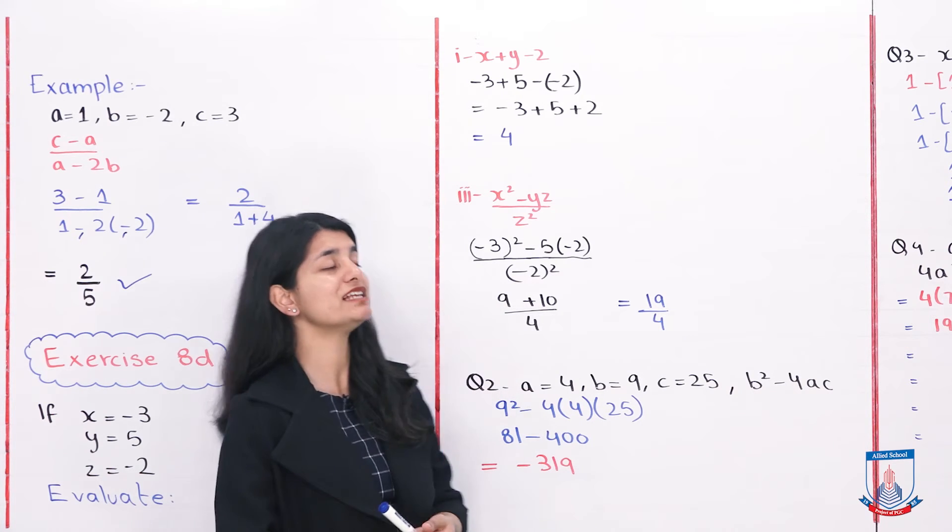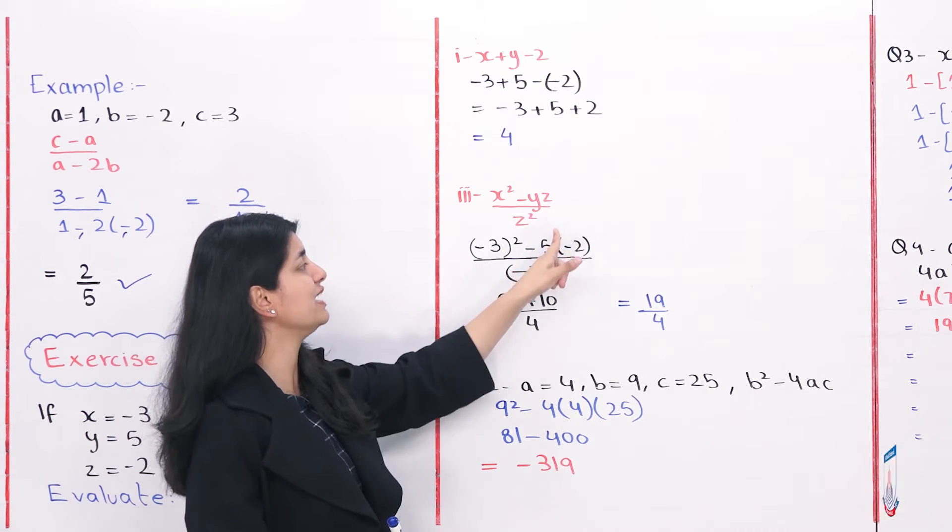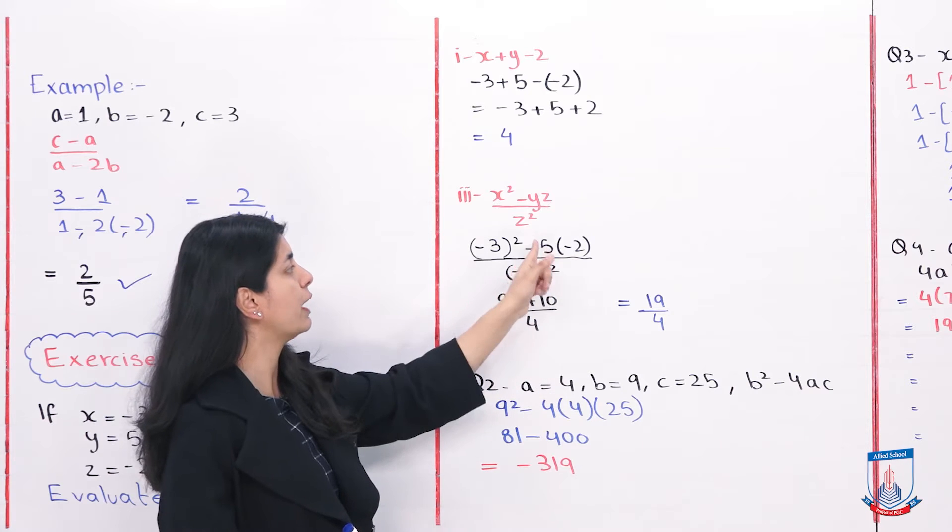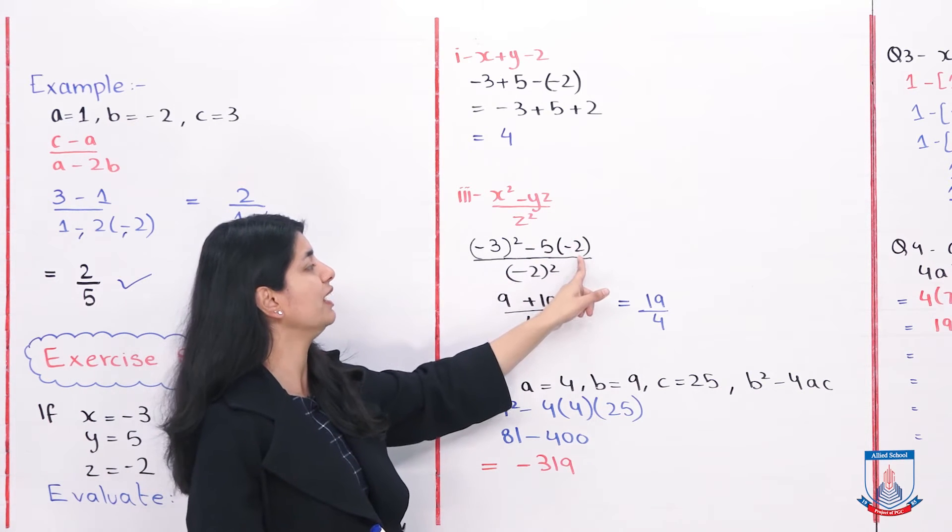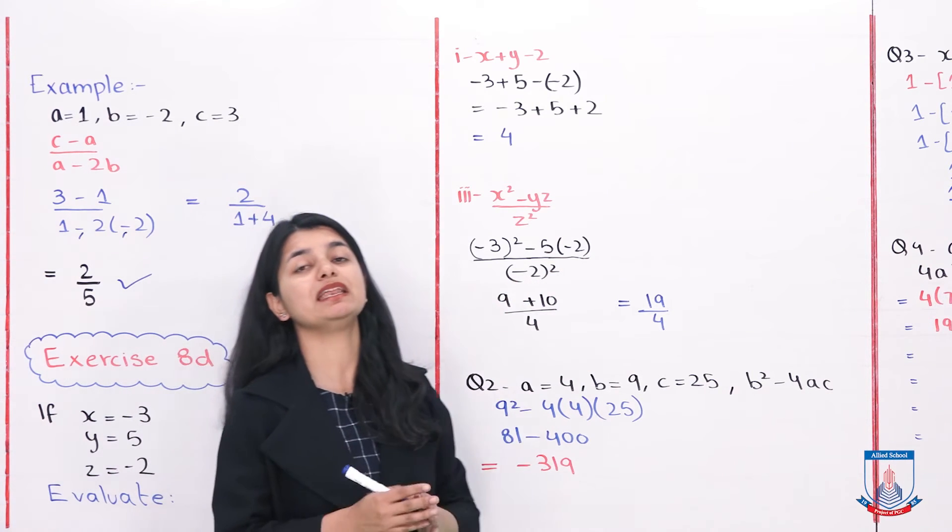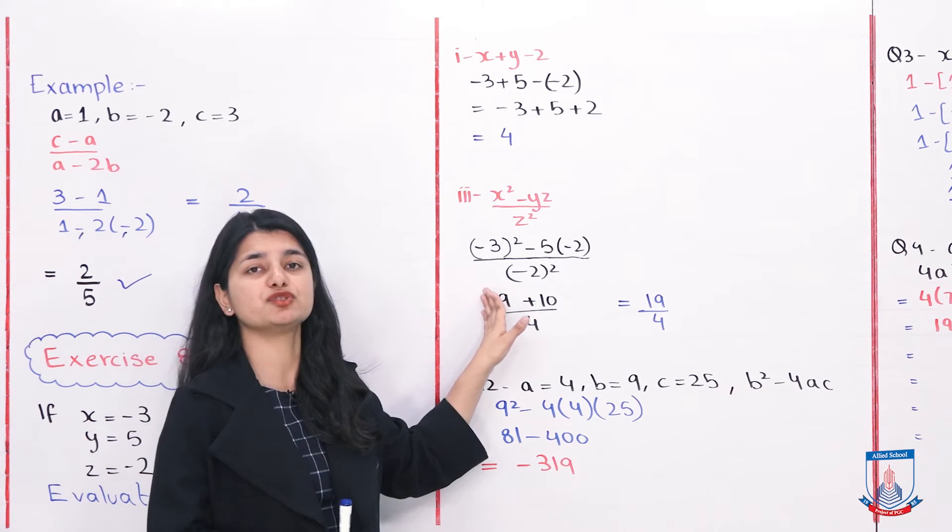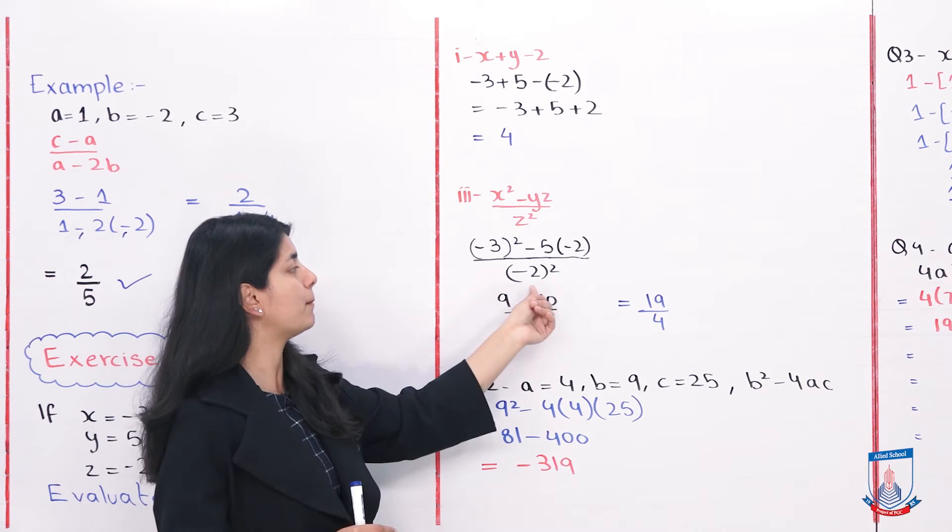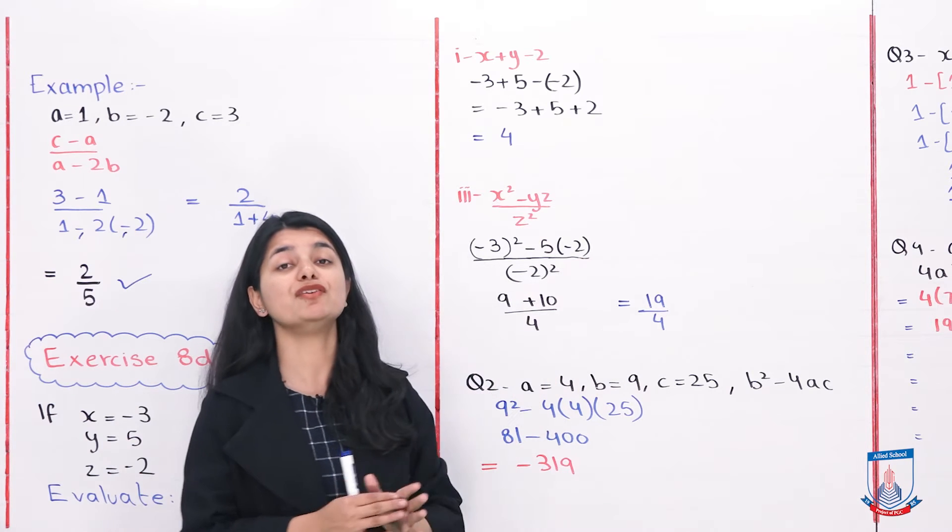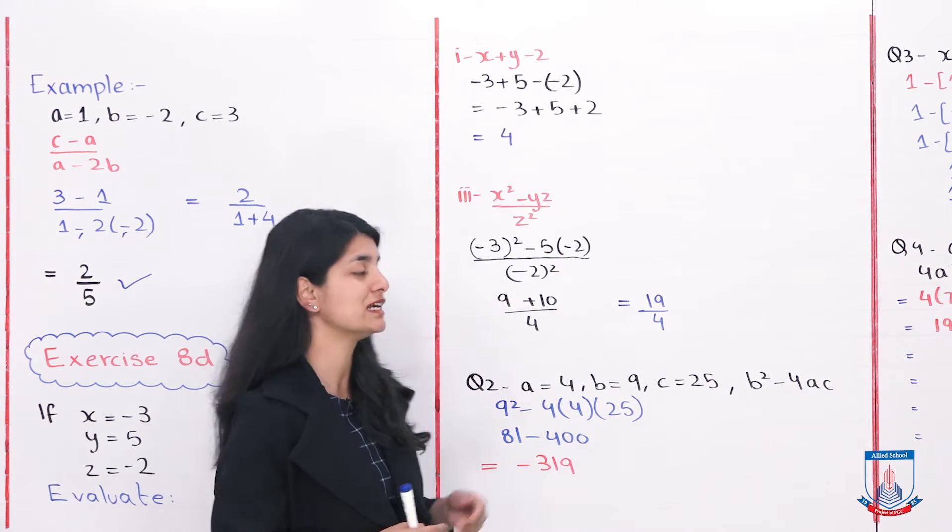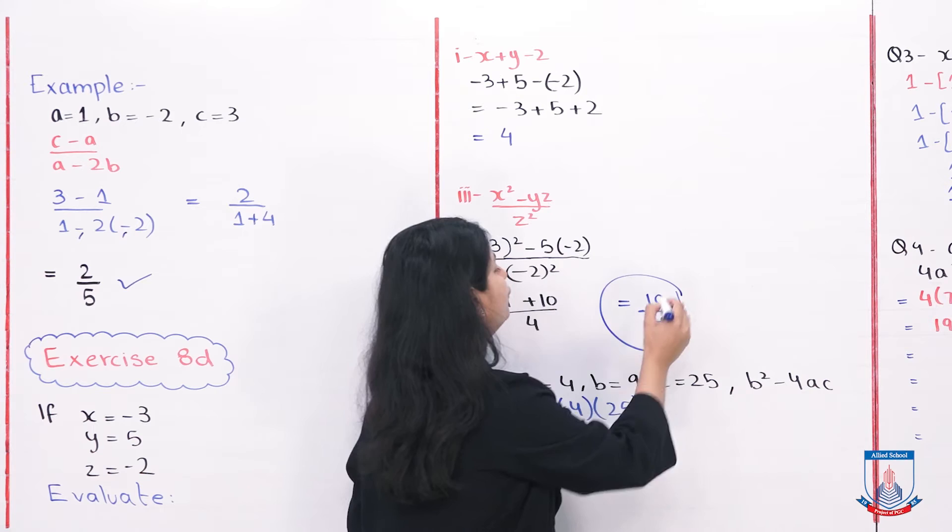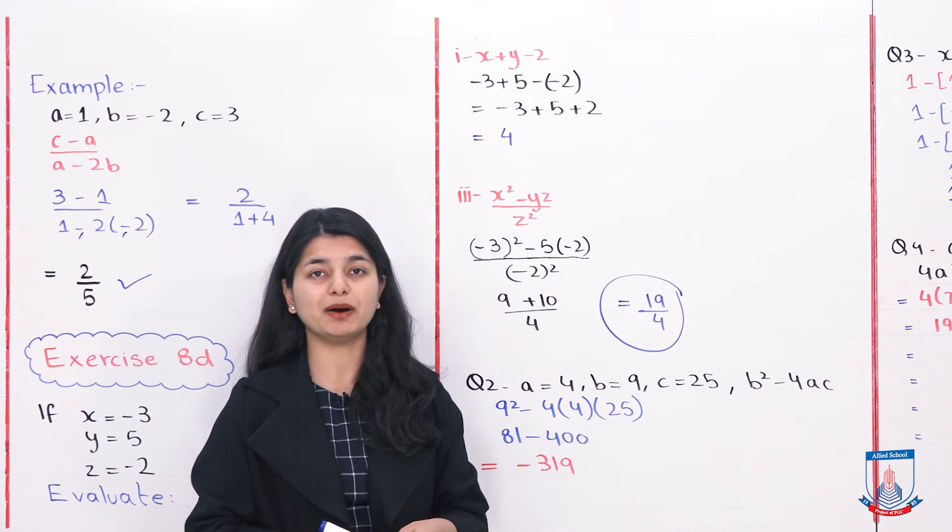Now let's look at part 3: x squared minus yz over z squared. x is minus 3, so minus 3 squared, then y is 5, then z is minus 2, divided by z squared which is minus 2 squared. 3 squared is 9, minus 2 squared is 4, so 9 over 4. Minus 5 into minus 2 is plus 10. 9 plus 10 over 4, the answer is 19 over 4.